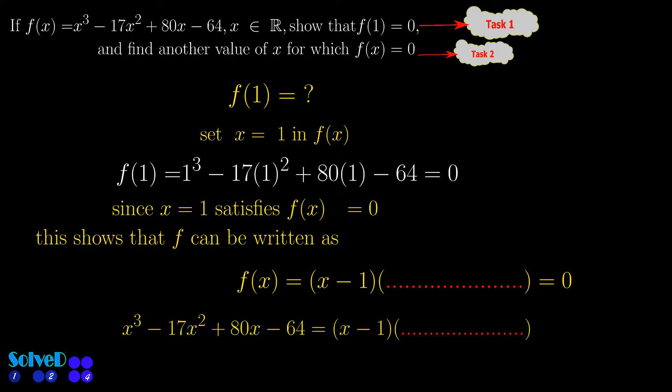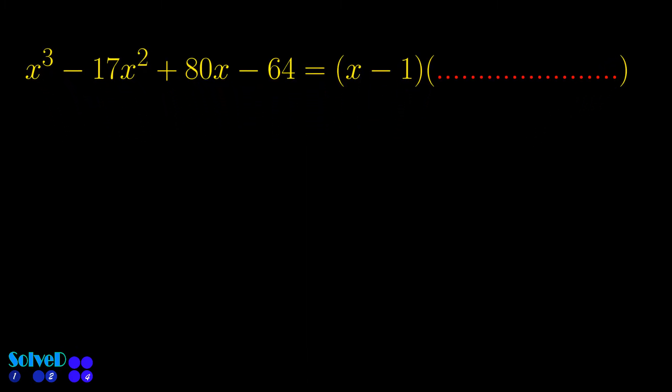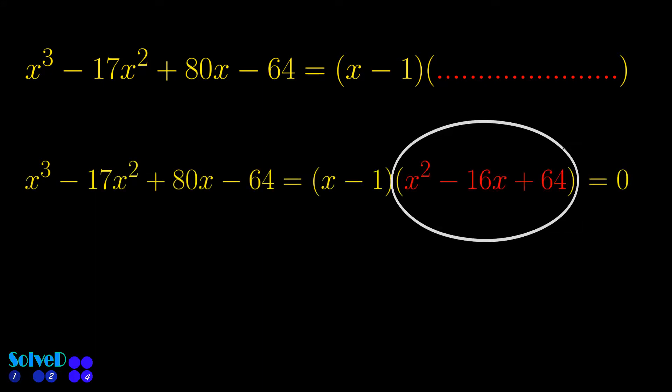So we can write this function as a product of x minus 1 times some other function. Now, let's find this other function or factor. Here is the factor that we are going to find.